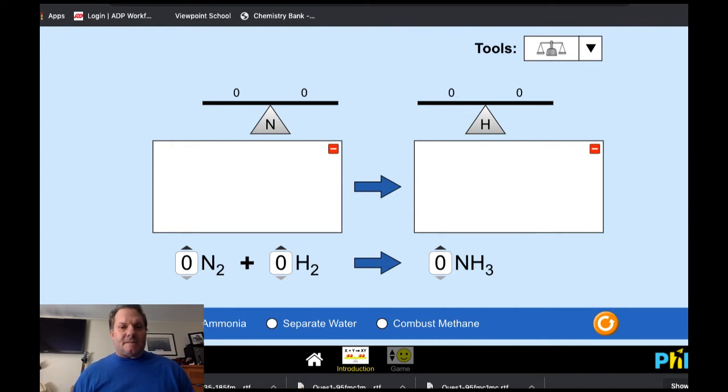So let's consider this particular animation. We're going to be reacting nitrogen with hydrogen to form NH3, which is called ammonia. We have a balance here that's going to show the number of nitrogens and the number of hydrogens. The left part of the reaction we always call the reactants. So nitrogen and hydrogen are called reactants. The right side is always the products, what is being produced.